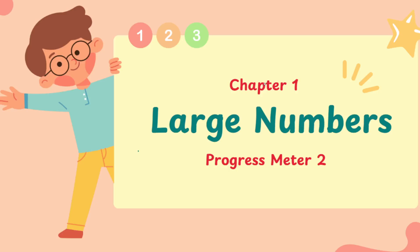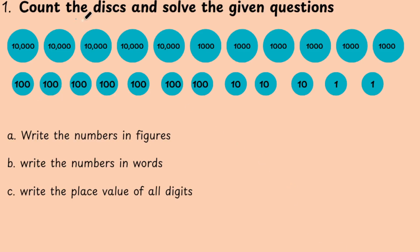Next we will see the progress meter. The first task is to count the desks and solve the given question. We are going to count how many numbers there are and write down the answers. First of all, let me count the desks. Here we have 10,000. How many 10,000 are there? 1, 2 and 3.